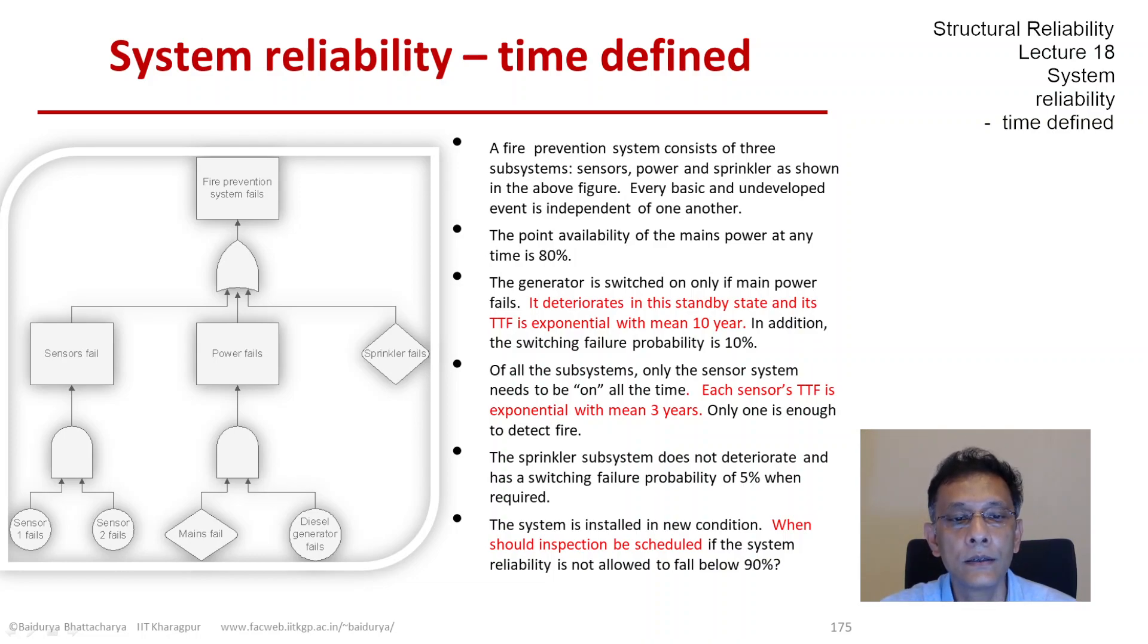The text in red indicates the units' failure. The generator has a TTF exponential with mean 10 years, then a switching failure probability of 10 percent. The sensors are exponential with mean three years. The water system does not have any time dependence, but the question is: when should inspection be scheduled if we don't allow reliability to fall below 90 percent?